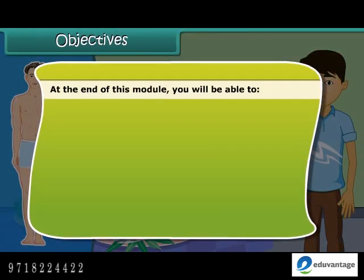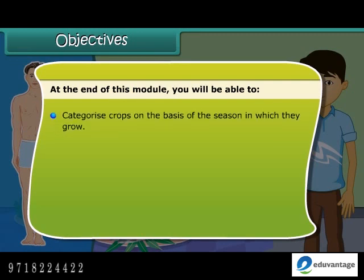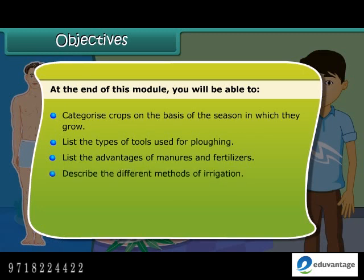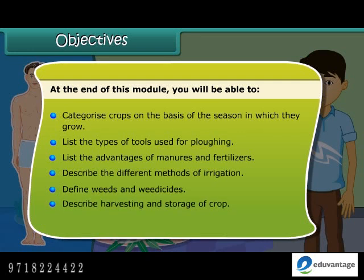At the end of this module, you will be able to: categorize crops on the basis of seasons in which they grow; list the types of tools used for plowing; list the advantages of manure and fertilizers; describe the different methods of irrigation; define weeds and weedy sites; describe harvesting and storage of crops; and explain Animal Husbandry.